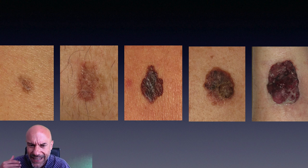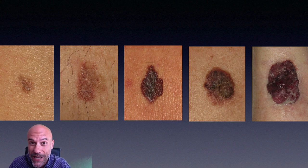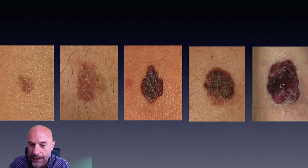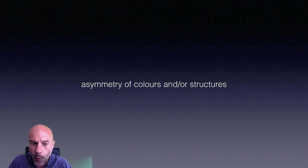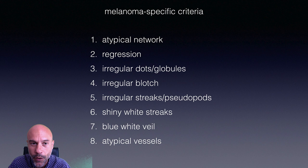There is no doubt that dermoscopy made us able to detect the morphologic asymmetry of melanoma at an earlier stage — at the stage where clinically it does not yet fulfill the criteria we would like to see. Asymmetry of colors and asymmetry of structures is the main morphologic criterion of melanoma.